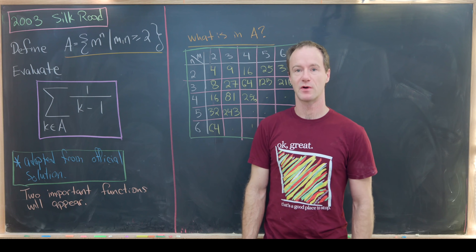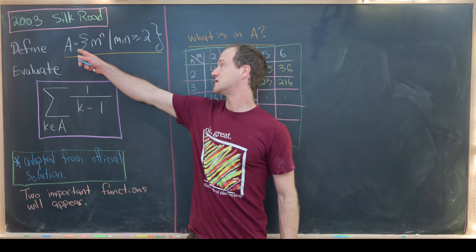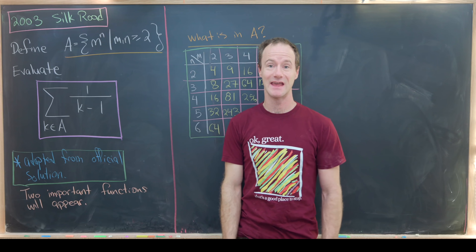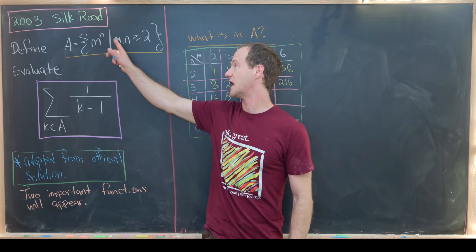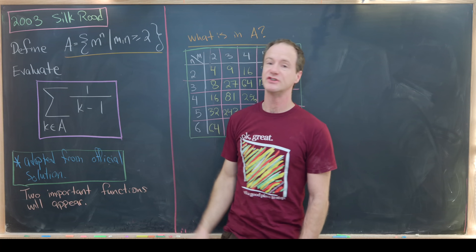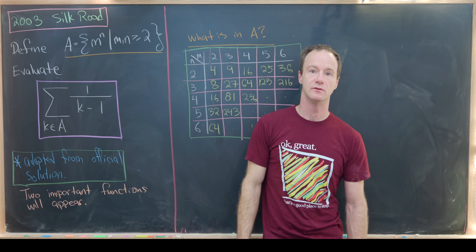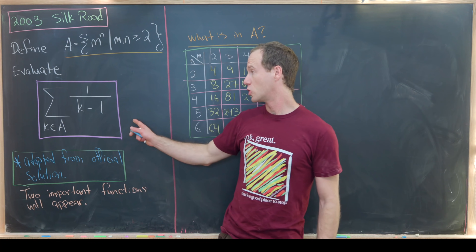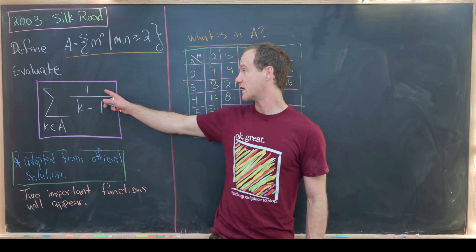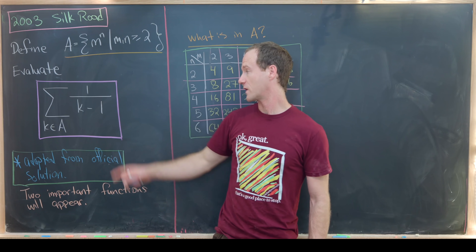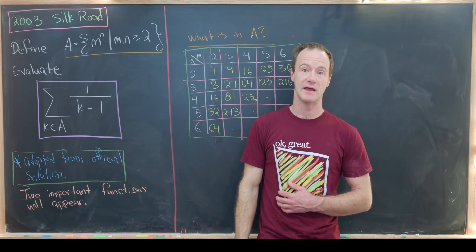Let's look at the statement of the problem. We'll first define this subset of natural numbers A as all numbers of the form m to the n, as m and n range over all natural numbers bigger than or equal to 2. Then our goal is to find the sum of all numbers of the form 1 over k minus 1, as k runs through the values from A.